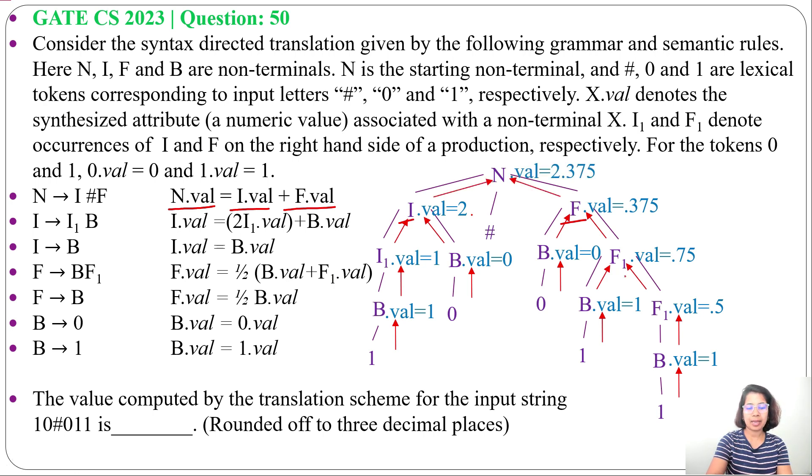And, in question, it is asking the value computed by the translation schema for the input string 10#011 is blank. And, it should be rounded up to 3 decimal places. So, after rounded up to 3 decimal places, answer is 2.375.